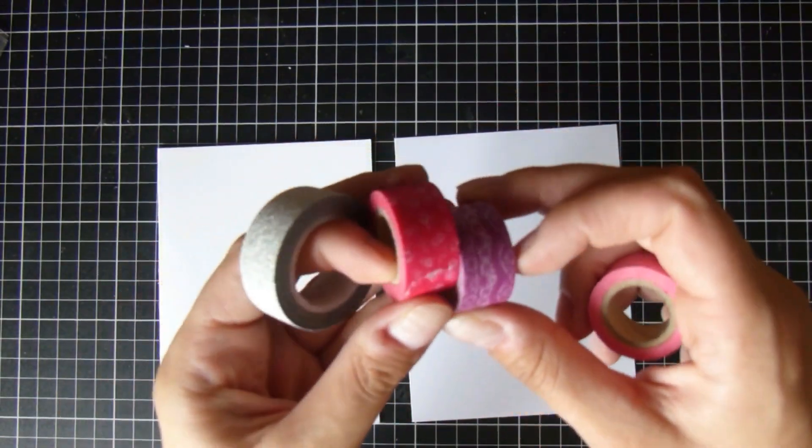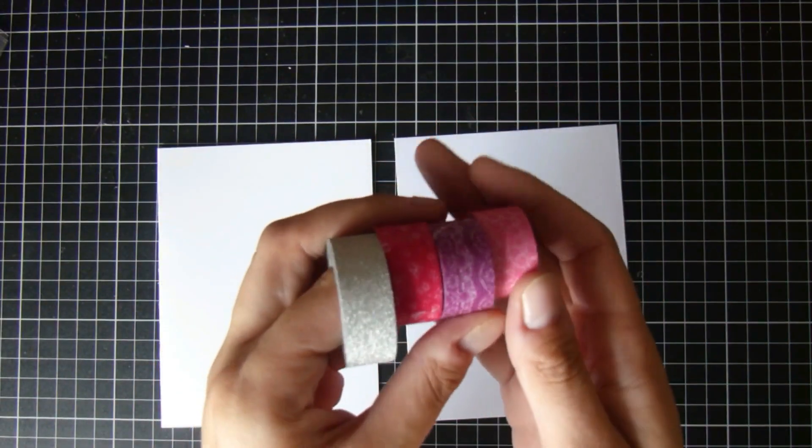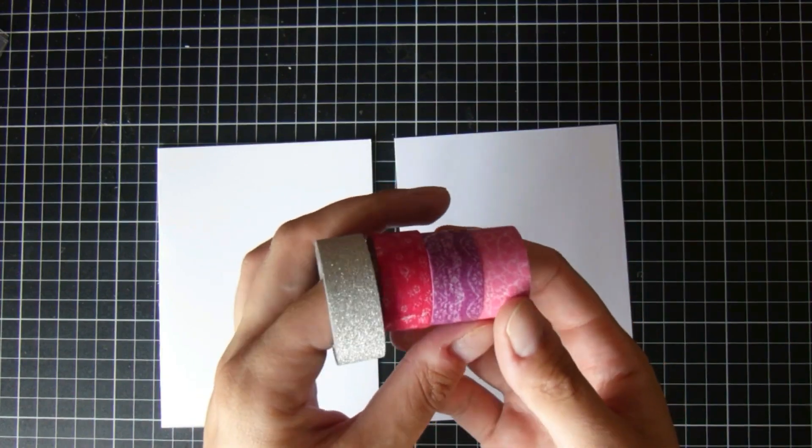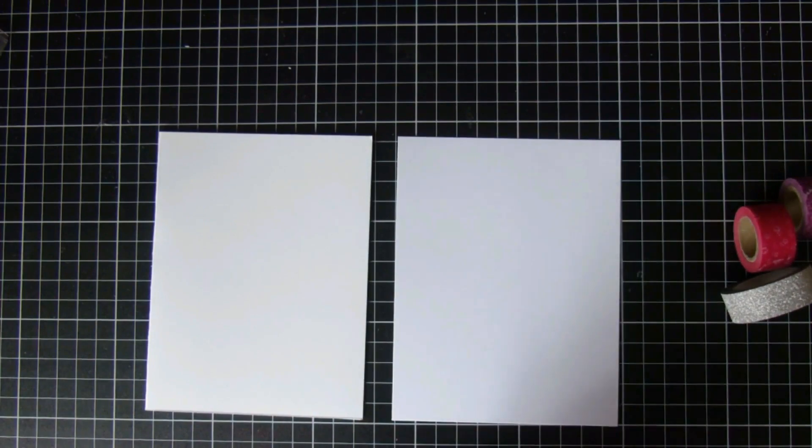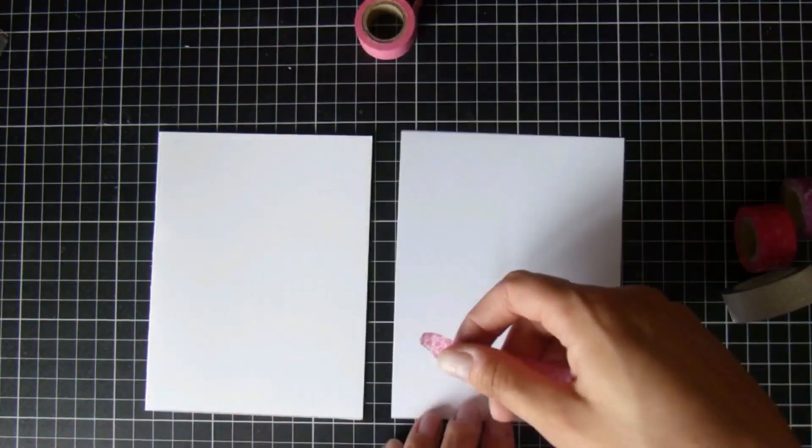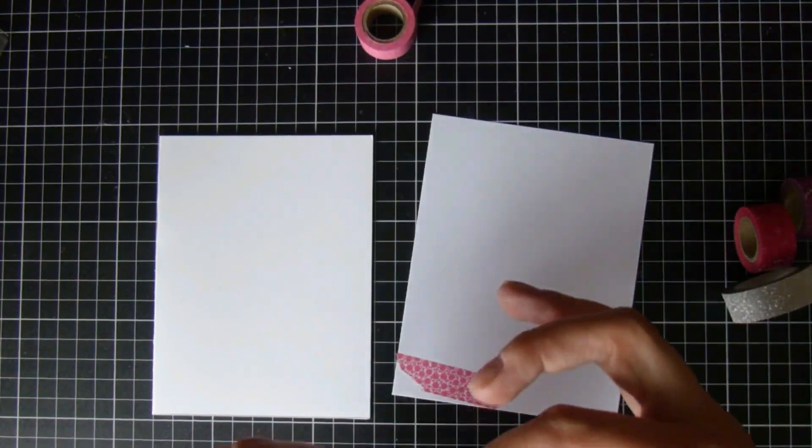Kind of like a darker pink, a purple, and a lighter pink. And then the one on the left is silver glitter washi tape. These are all just from my stash, and I just picked those three colors that went together and then a silver one as well.